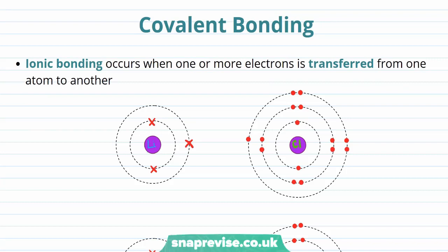Covalent bonding is one of the three types of bonding that you need to be aware of, alongside ionic bonding and metallic bonding. Let's introduce covalent bonding by looking at how it's different to ionic bonding.